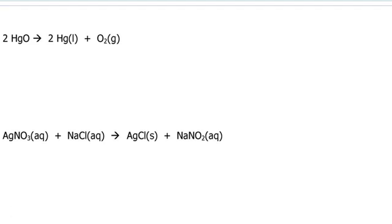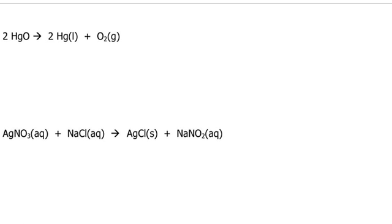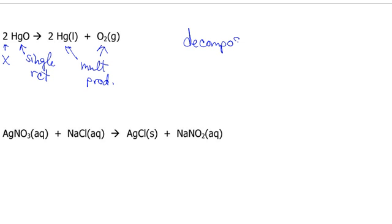Now we look at our next one. We've got 2HgO. This two out in front, ignore that. For looking at reaction type, we have one single substance, so a single reactant type. And then we've got multiple products. Now I want to say, are those ions? No, they're not ions. So I know that this is decomposition.